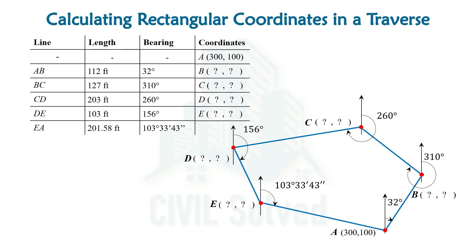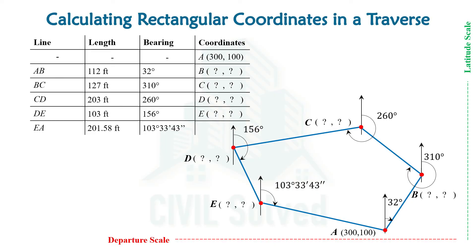Now, in order to have a better understanding of the position of the different points, let's use the latitude and departure scale. These are the gradations on this scale, and the red and green dots will tell us about the position of the point where we are currently lying.